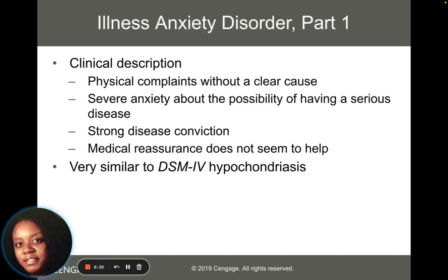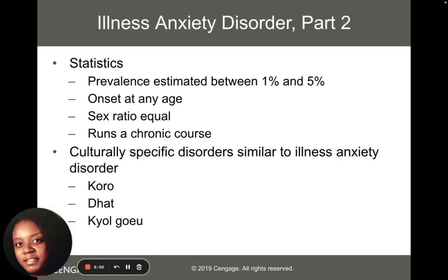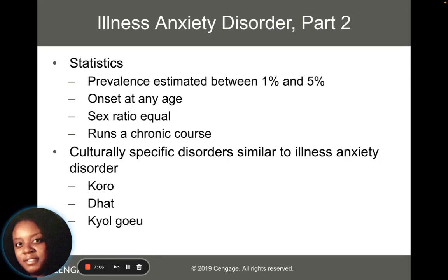A good example of illness anxiety disorder is somebody who has a headache that's been going on for a while and goes to their doctor because they think it's a brain tumor. These are people who have physical complaints without a cause and often think it's something severe. Illness anxiety disorder is prevalent in about one to five percent of the population. Onset can happen at any age. It doesn't affect males or females more than the other — it's equal — and it can also have a chronic course.